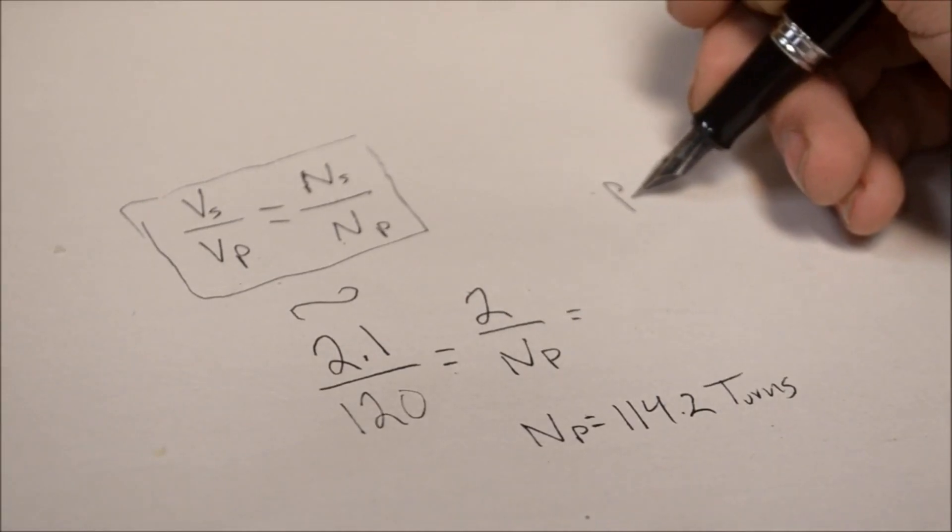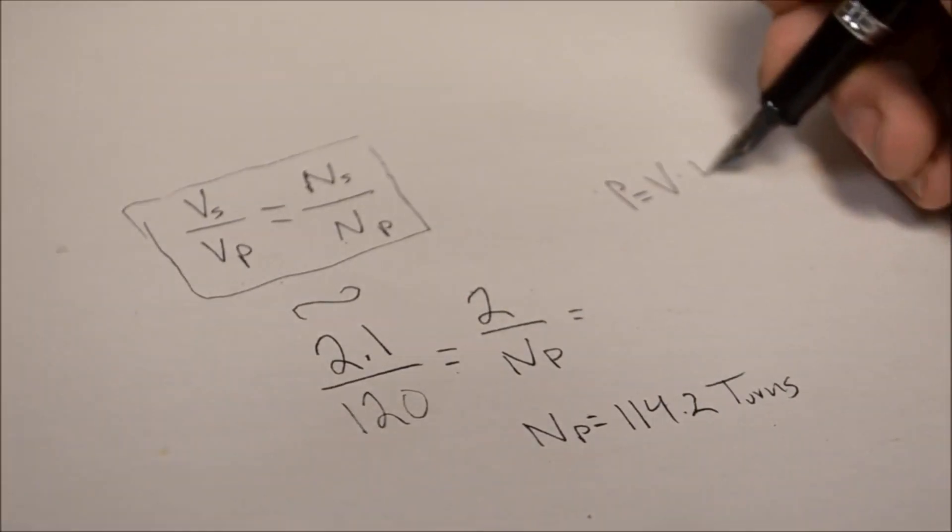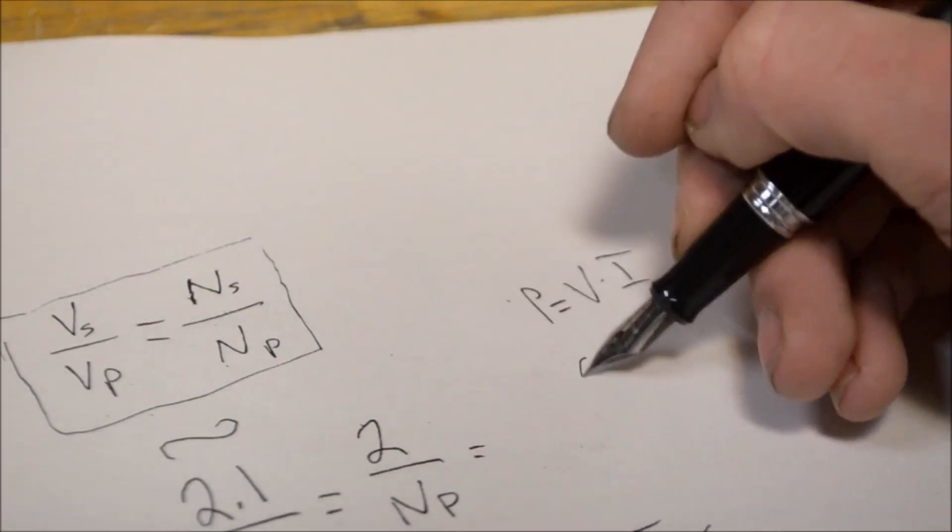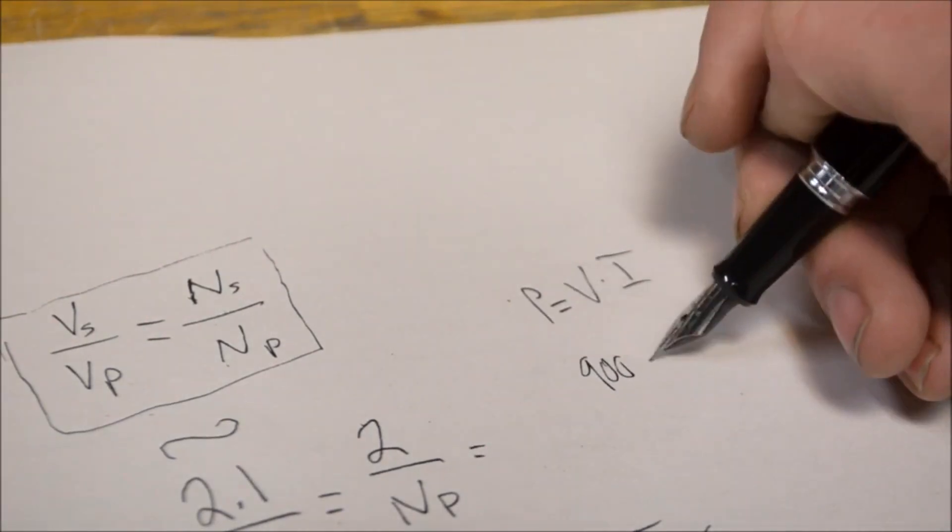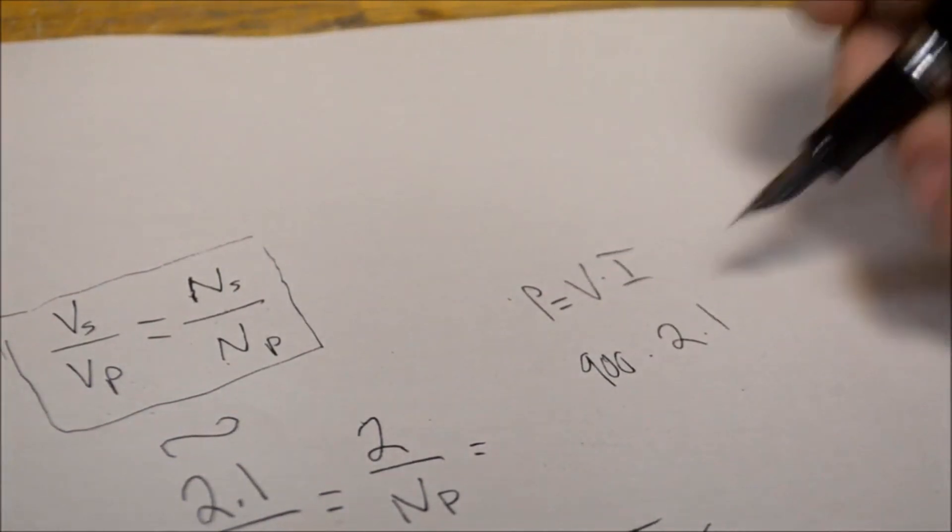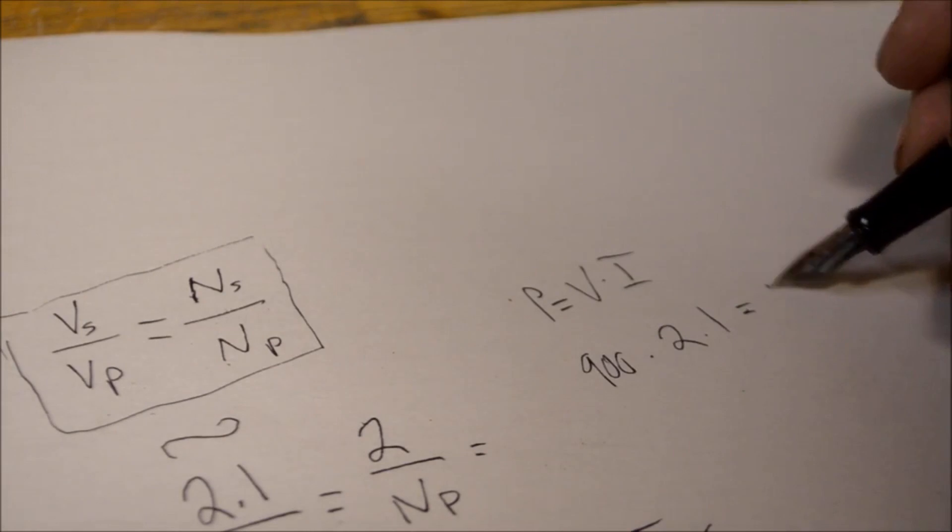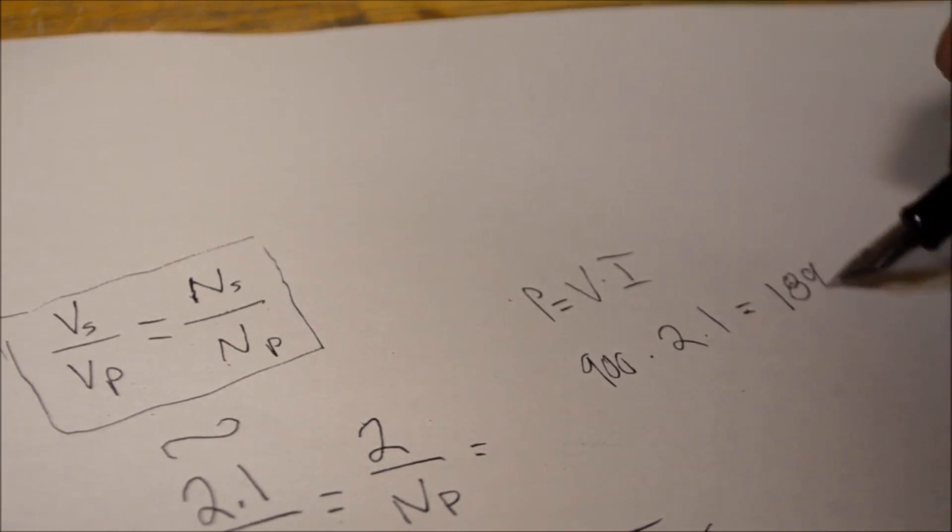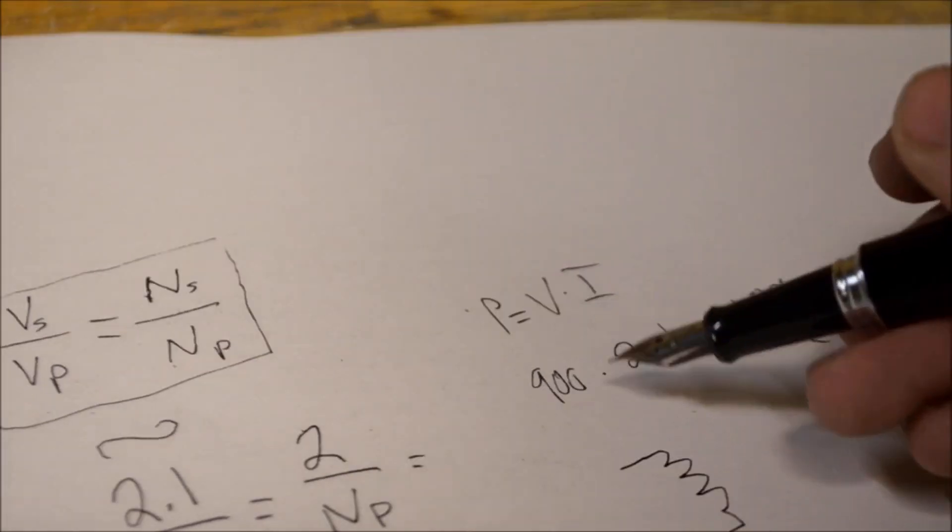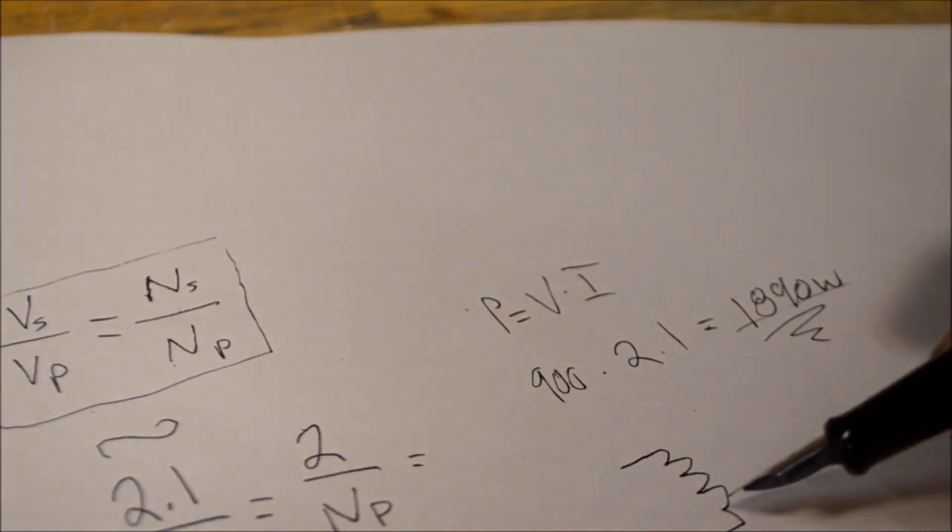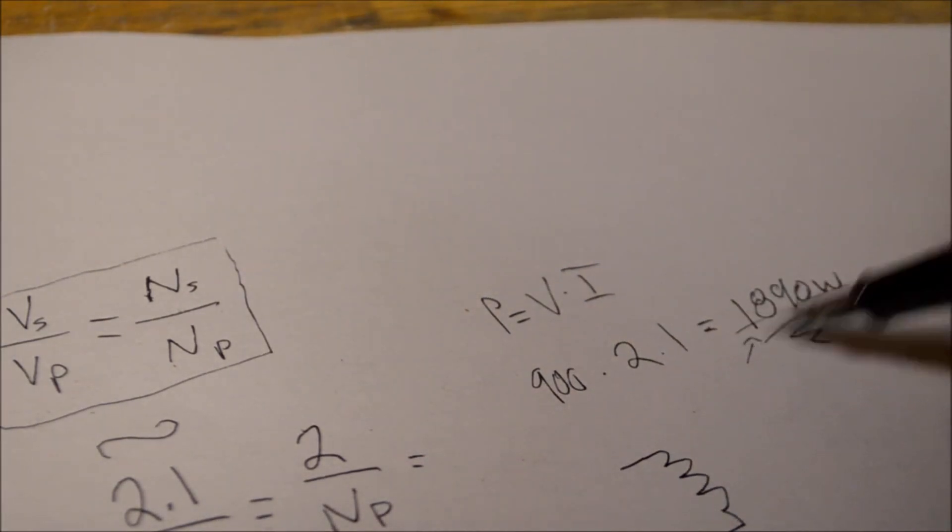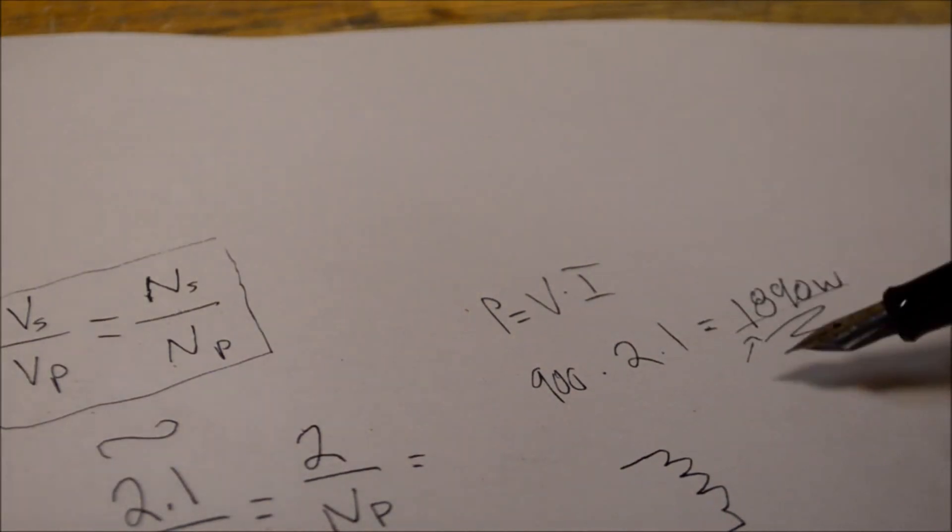Now one last thing: the power in watts is going to be equal to voltage times current. So the current that we maxed out at was around 900 amps. So if we have 900 amps times around 2.1, we can see that the amount of power running through that secondary coil was around 1890 watts. If we were to measure the amount of power in watts going through the primary coil, we'd see that it'd be slightly more than this. This is because the transformer is not 100% efficient.